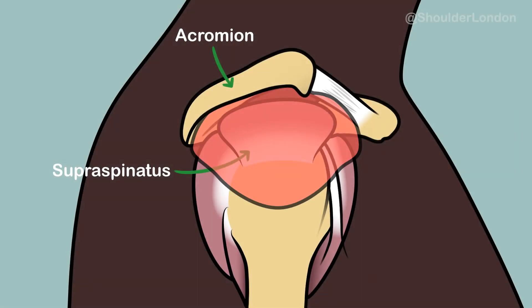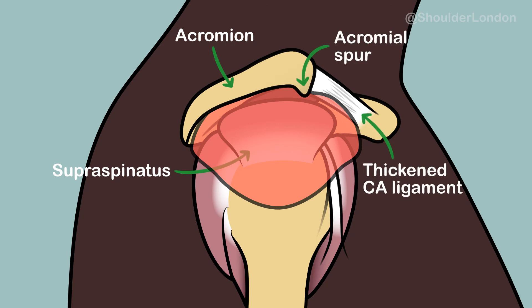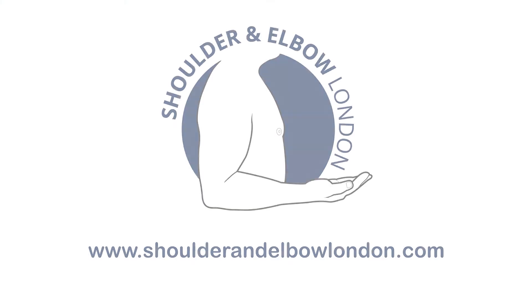Shoulder impingement is an old term used to describe pinching of the rotator cuff tendon under the acromion as the patient lifts their arm. It is thought to occur when there are significant acromial spurs or thickening of the coracoacromial ligament, reducing the space for the tendon to glide.